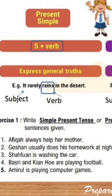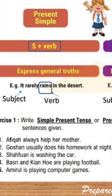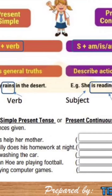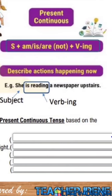"It rarely rains in the desert." Subject tadi ialah 'it', 'rains' ialah verb. Maksudnya, jarang hujan di padang gurun. 'It' ini merujuk kepada desert itu tadi. 'Rains' maksudnya hujan. Hujan ini ialah satu action. Ini adalah verb. Kita lihat contoh yang kedua.